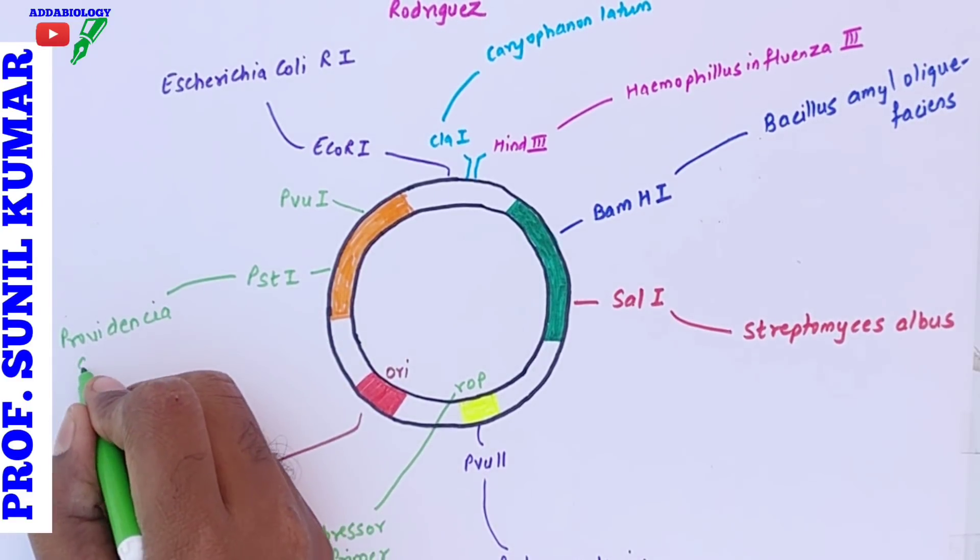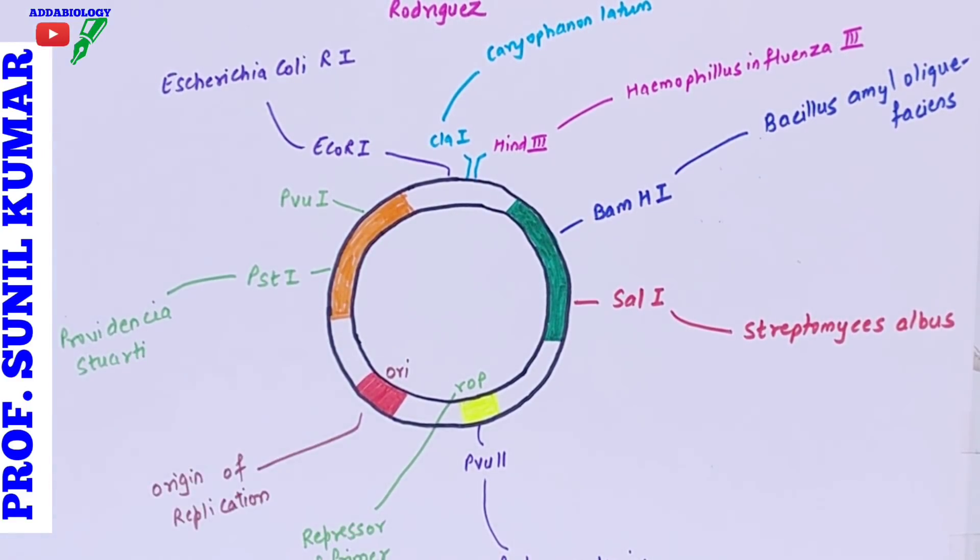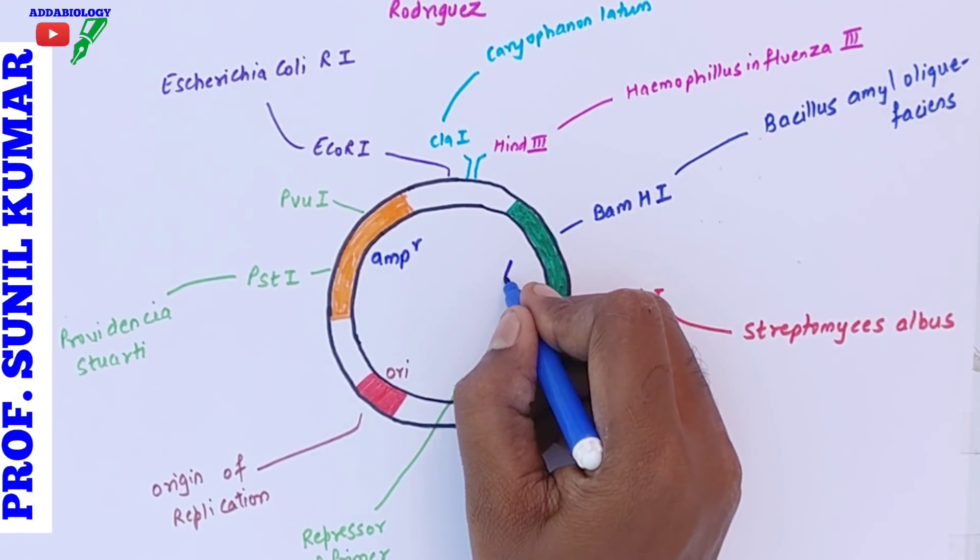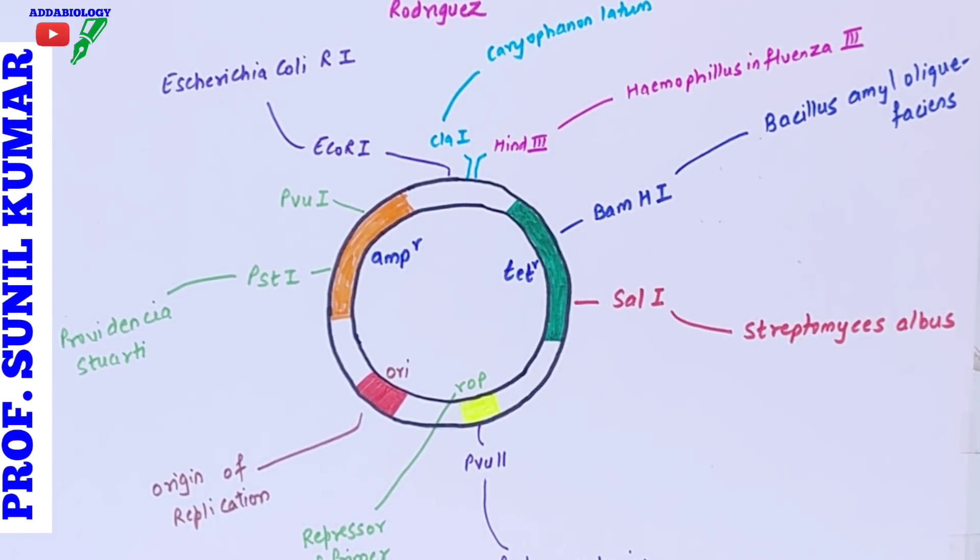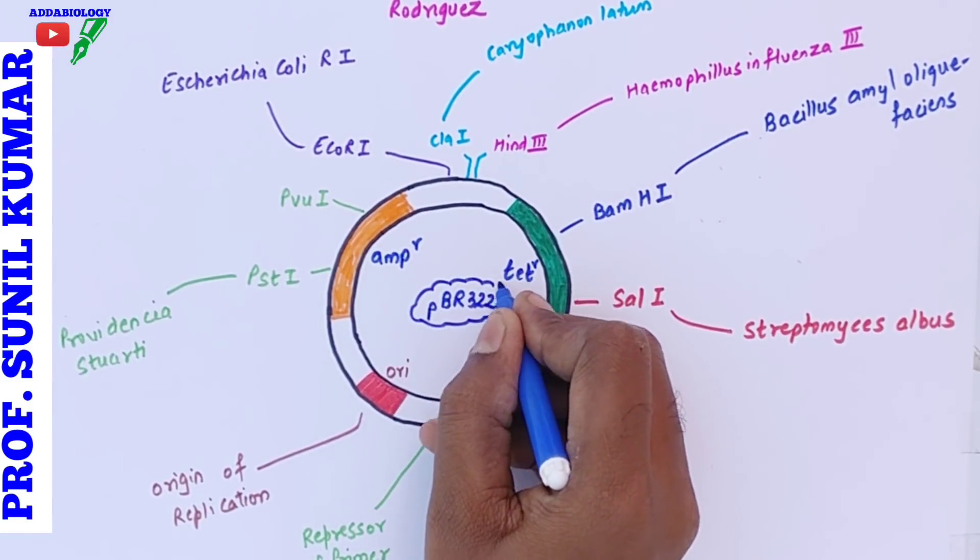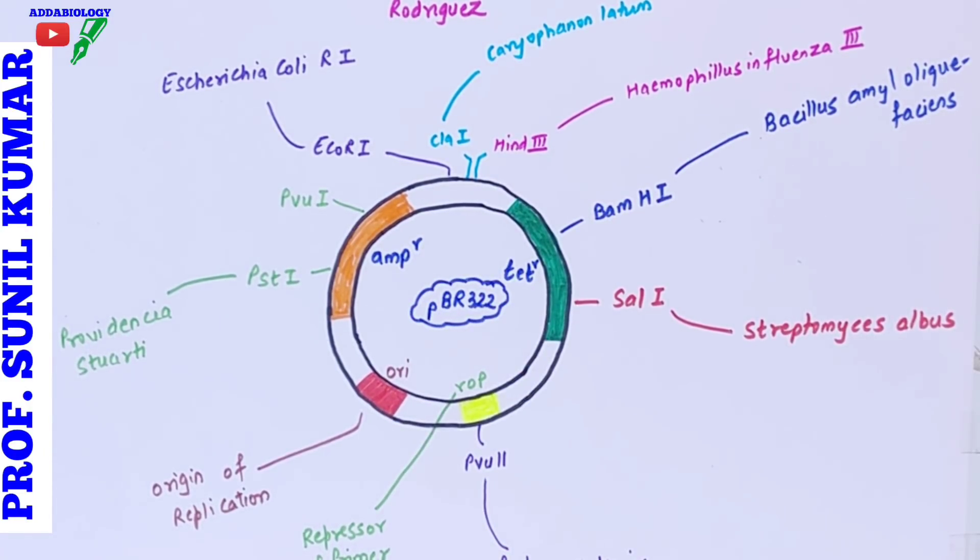Next we have PvuI which we already did - Proteus vulgaris. We have PstI that stands for Providencia stuartii. In the plasmid we are having antibiotic resistance genes - one is ampR, that is ampicillin resistance gene, and we have tetR, that is tetracycline resistance gene.